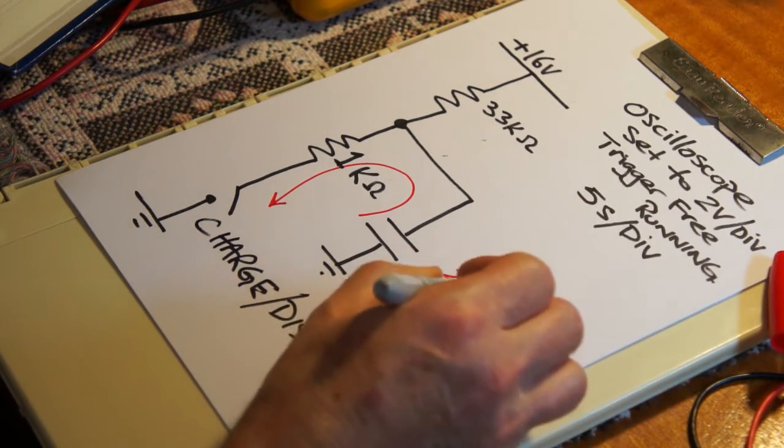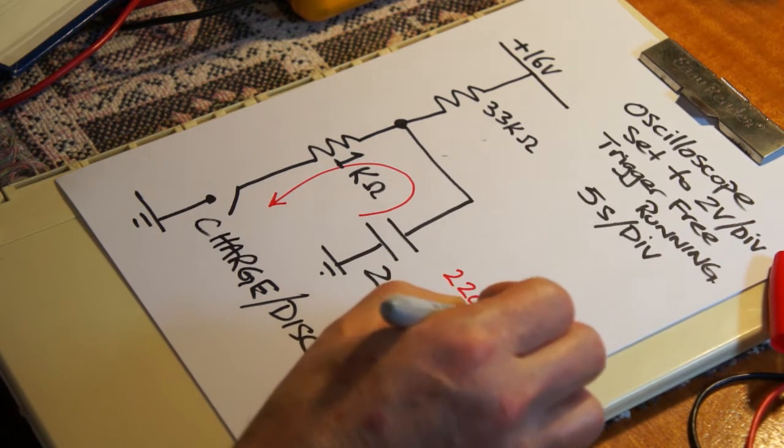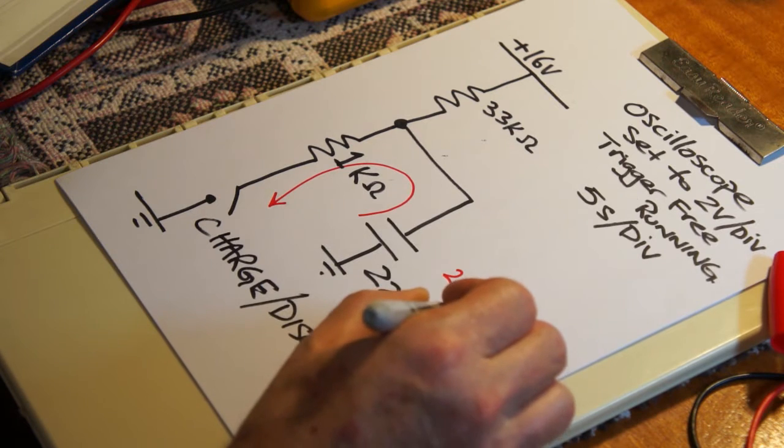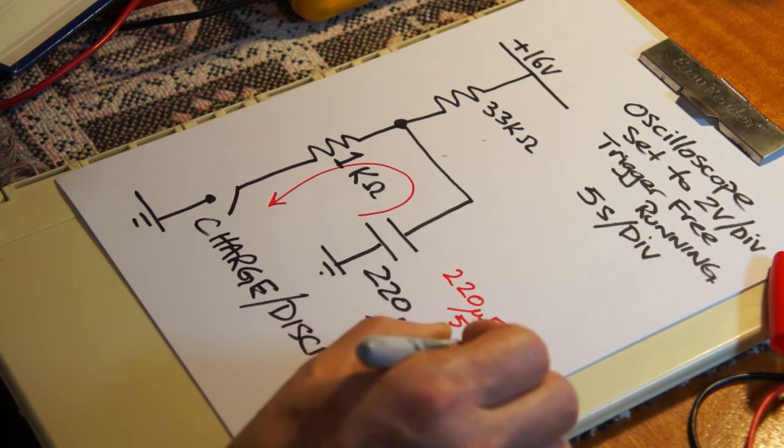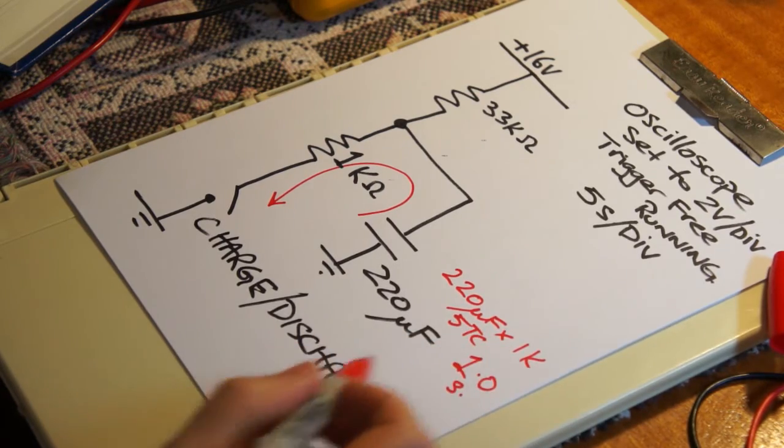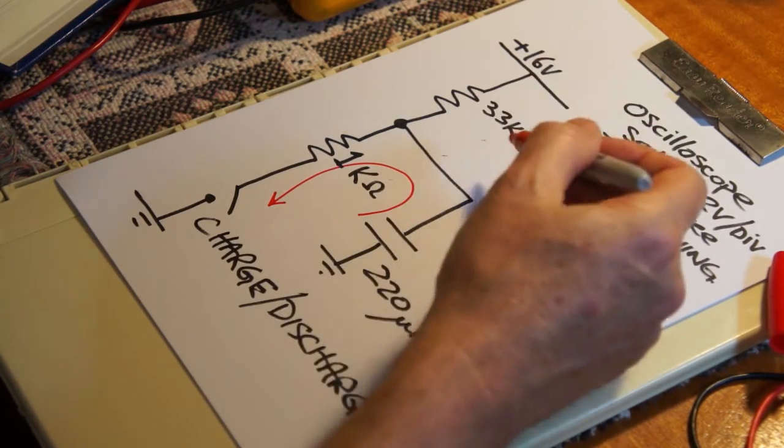We end up with just 220 microfarads times 1k ohm. And over five time constants, that's going to give me just one second to discharge. A lot different to when it's charging.